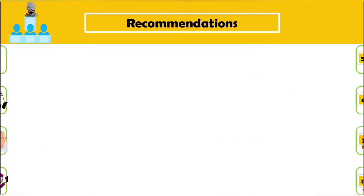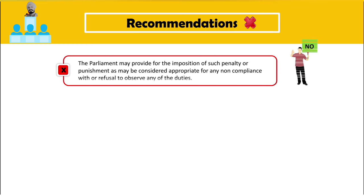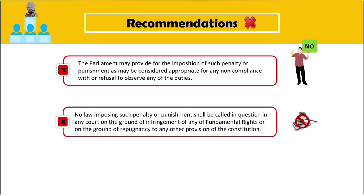Apart from these recommendations, there were some recommendations which the Congress party did not accept, maybe due to lack of feasibility or practicality. The committee had said that Parliament should make provision for some penalty or punishment if any person does not accept or refuses to do any of the duties. The committee had also recommended that no law will be questioned in any court which passes punishment or penalty for violation of any of the fundamental rights or any other provision of the Constitution.